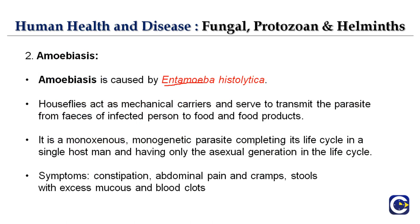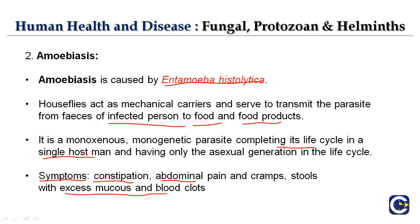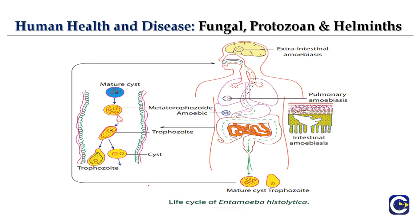The next protozoan disease is amoebiasis, also called amoebic dysentery, caused by Entamoeba histolytica. Houseflies act as mechanical carriers, transmitting the parasite from the feces of an infected person to food and food products. That is why you should never consume uncovered food or eat vegetables and fruits without washing them. It is a monogenetic parasite completing its life cycle in a single host, with an asexual generation in the life cycle.